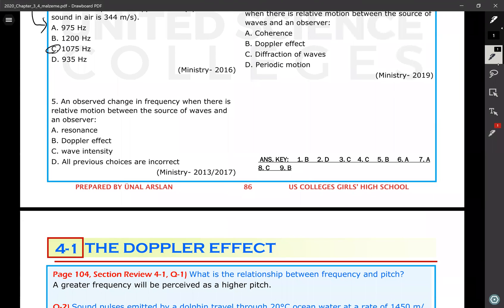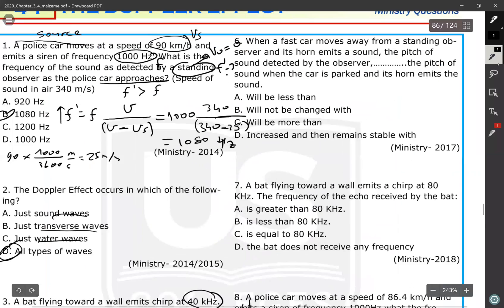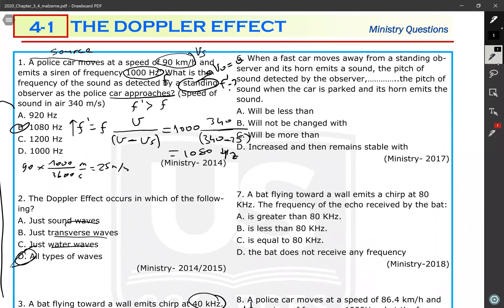An observed change in frequency when there is a relative motion between source and the observer is known as Doppler effect. The name of this phenomenon is known as Doppler effect, or frequency shift. When a fast car moves away from a standing observer and emits a sound, the pitch of the sound detected by the observer will be lower. Moving away - lower pitch. The pitch of the sound when it's parked - there is no relative motion, you are going to get the original frequency. But when moving away, the pitch drops. So this will be less than - lower pitch. Answer is A.